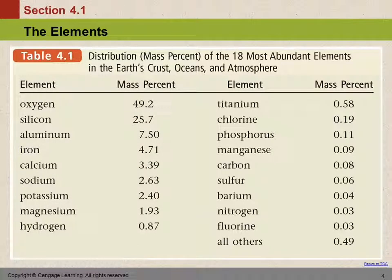Just for general interest, this table shows us distribution by mass percent of the 18 most abundant elements in the Earth, including the crust, the oceans, and the atmosphere. That does not include the core of the Earth, because I don't know that anybody knows the exact composition of that. We see that oxygen is the most prevalent element in the world, literally.